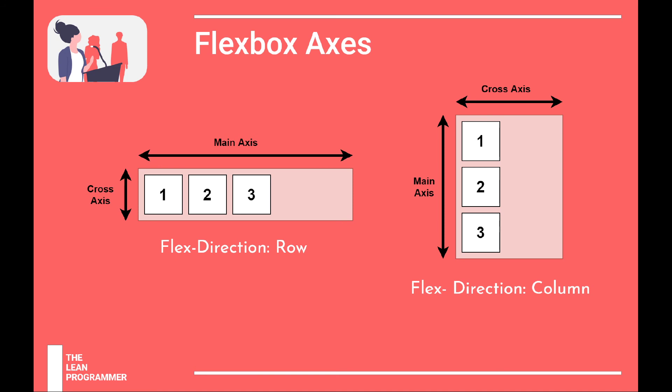And if it's column, then the main axis is the vertical axis. And cross axis, of course, is the perpendicular axis to the main axis.